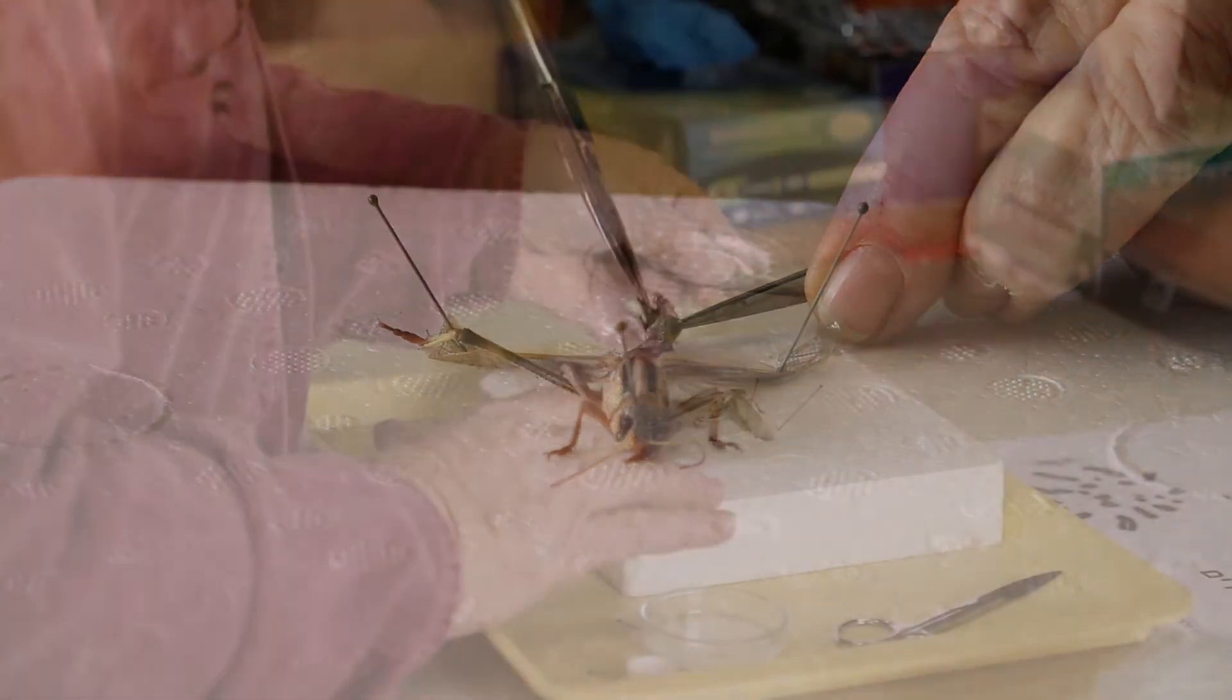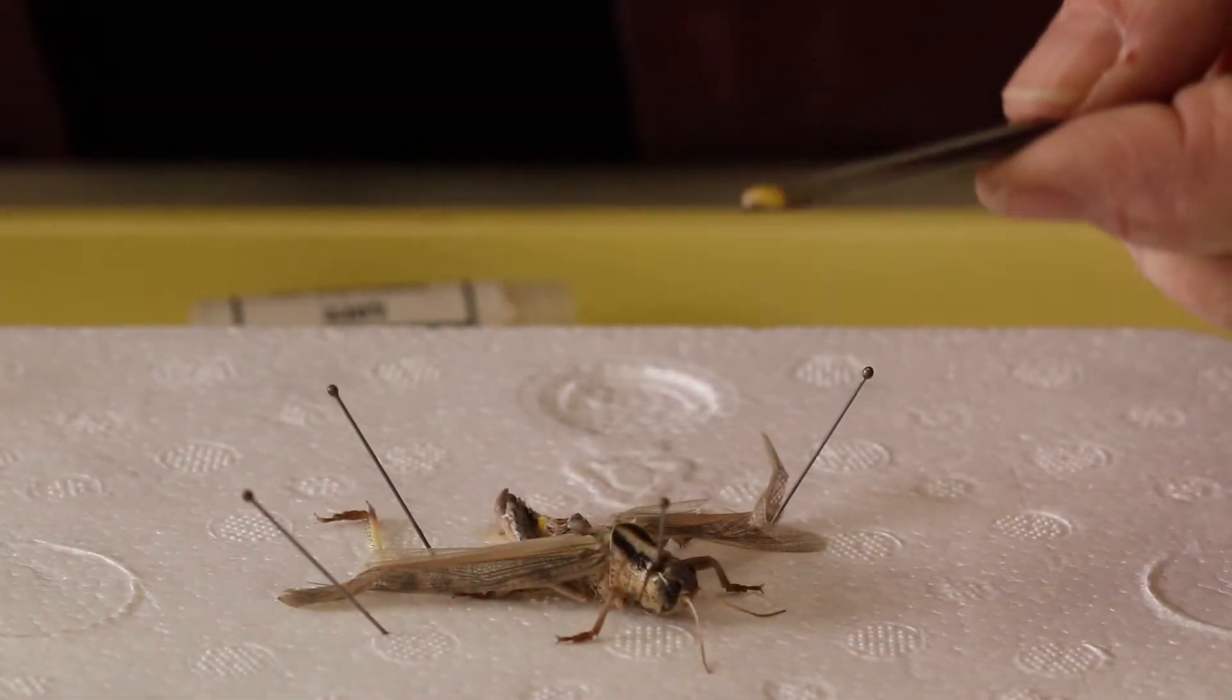Dr. Richler is removing the yellow, fat-covered testicles from the backside of the grasshopper.